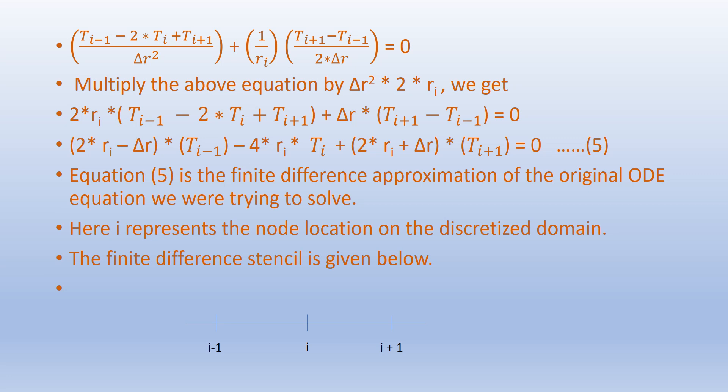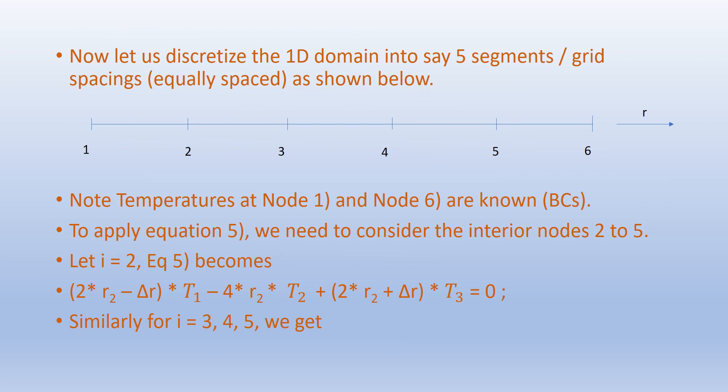Equation 5 is the finite difference approximation of the original ODE. Here i represents the node location on the discretized domain. The finite difference stencil is given. Now let us discretize the 1D domain into five segments or grid spacings, equally spaced, from 1 to 6 along the radial direction. Note: temperatures at node 1 and node 6 are known — these are the boundary conditions.